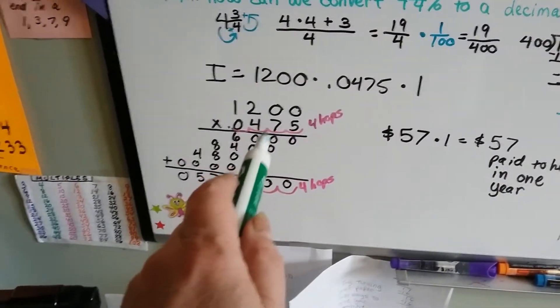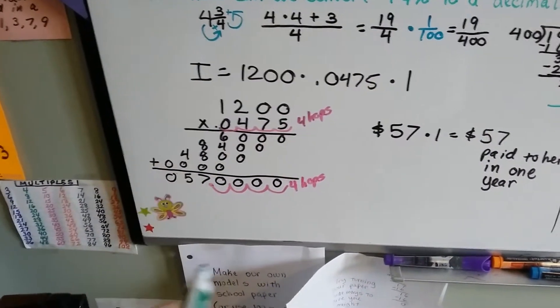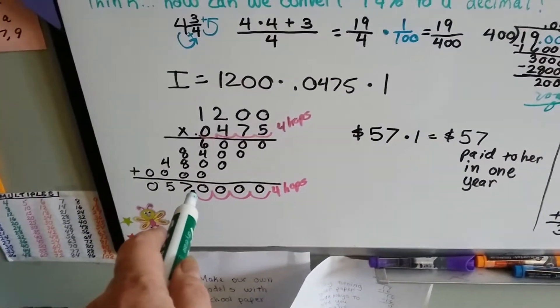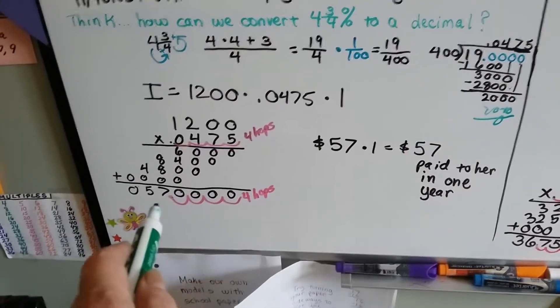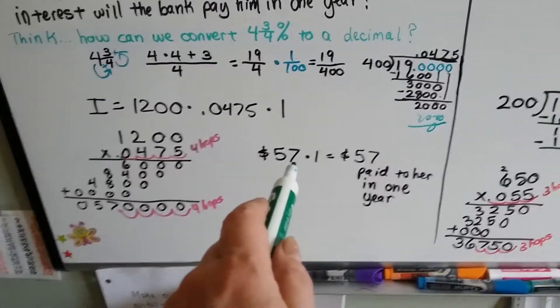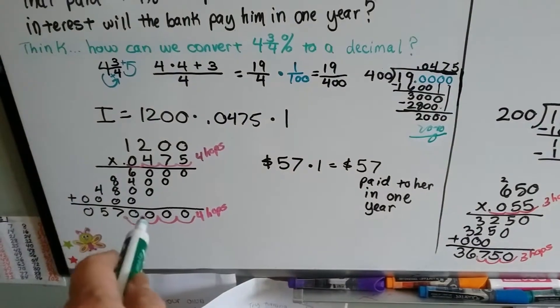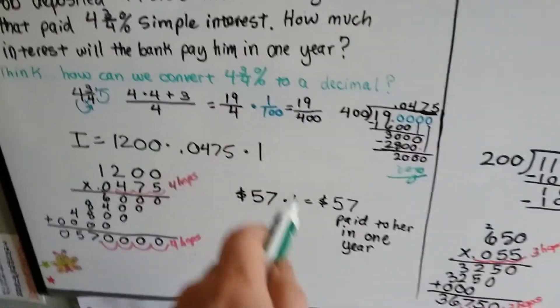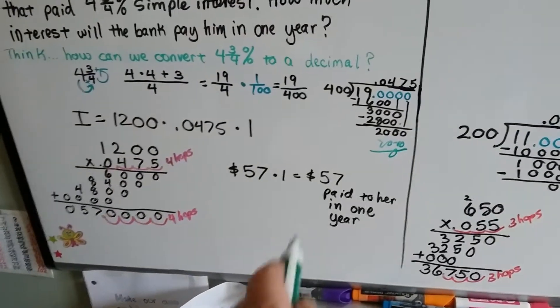So we finish multiplying the whole thing. We see that there's one, two, three, four hops over to the decimal point in the equation. So we go one, two, three, four hops over for the decimal point in the product. We end up with $57 or $57.00. $57 times the one year is $57 paid to him in one year.